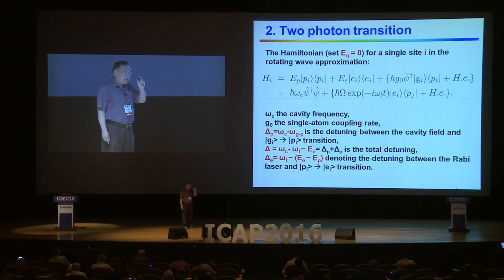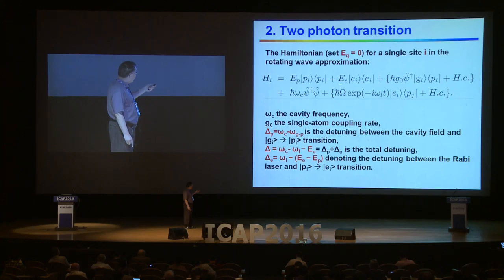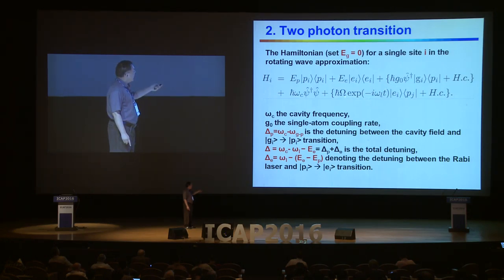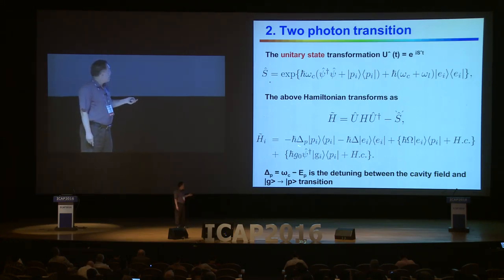Firstly, we discuss the two-photon transition. This is a three-level system, and we can use the two-photon transition to reduce the complete three-level system to the two-level system. If we choose the ground state energy equal to zero, in this case we can get the intermediate states energy, excited states energy, and the cavity energy. Then we consider the coupling between the intermediate states and the ground states, and the intermediate states and the excited states — here G_0 and ω are the coupling parameters.